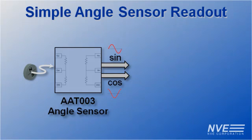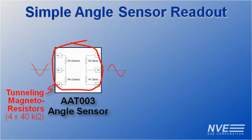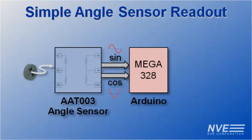There are several AAT sensor versions with different resistances. The AAT-003 has 40 kiloohm elements for a 20 kiloohm output impedance, which is ideal for direct interface to the analog inputs of simple microcontrollers.